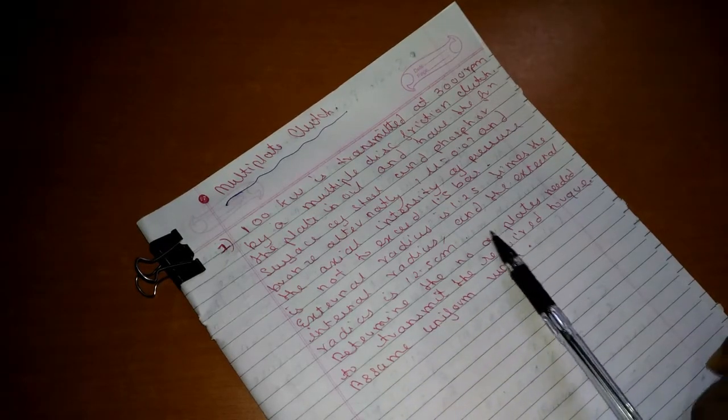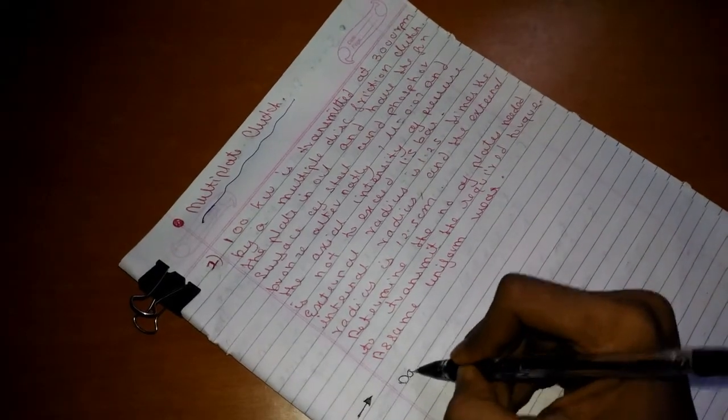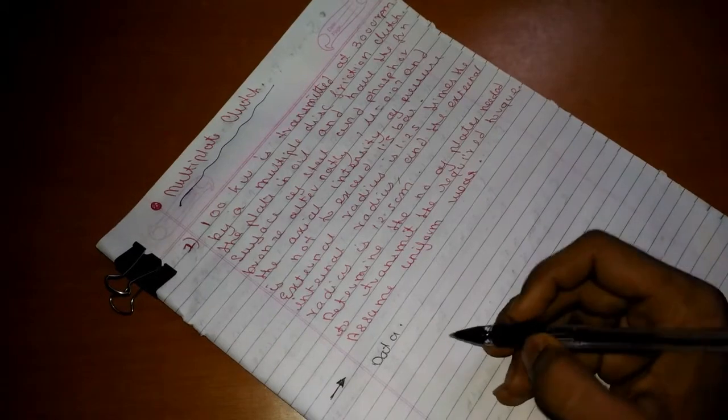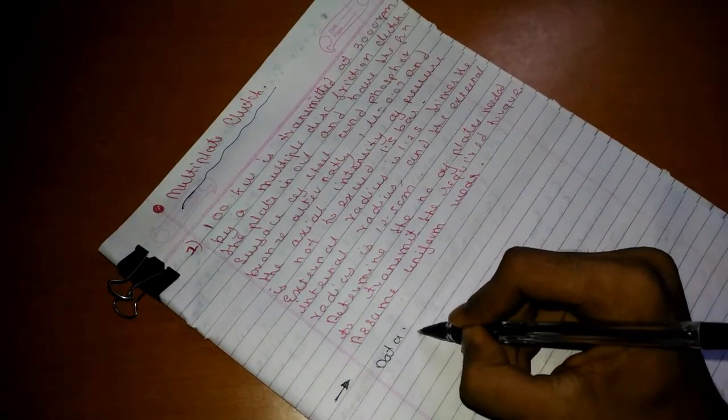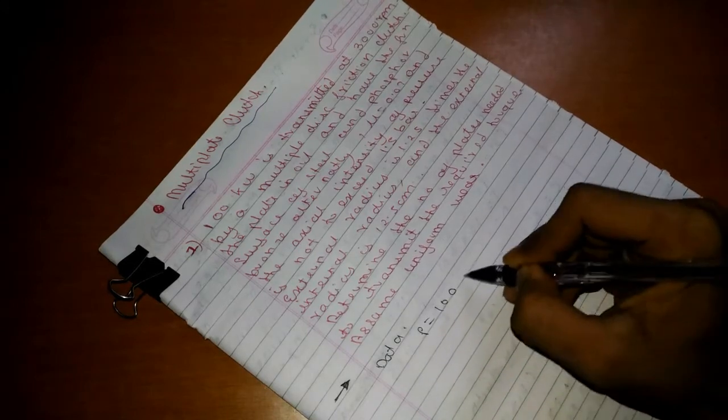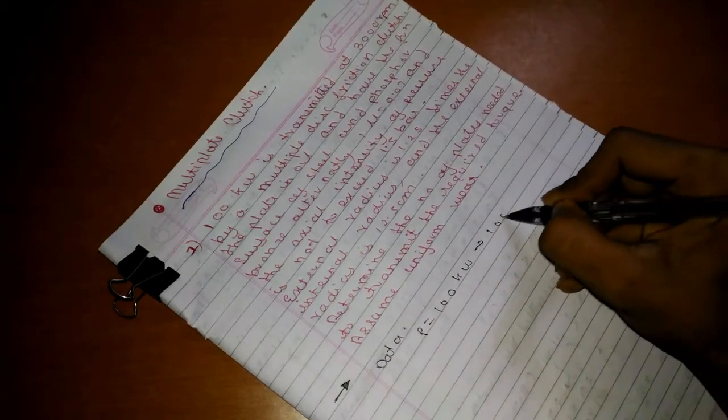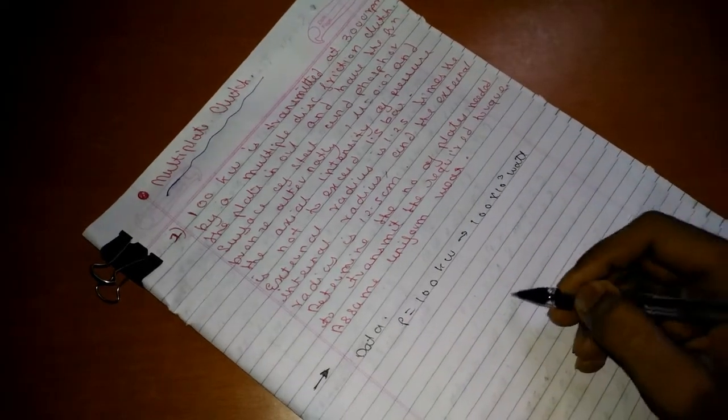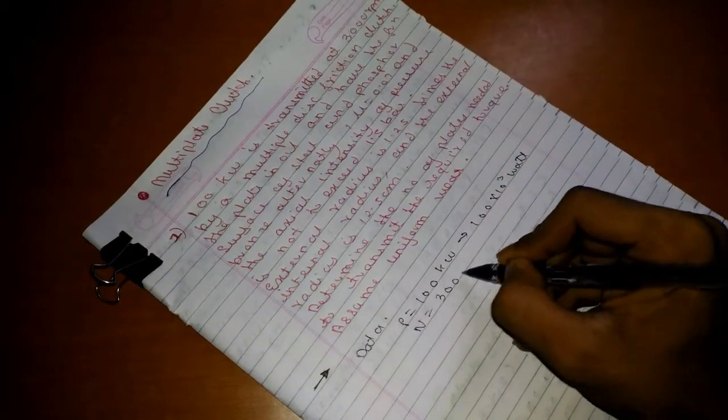Let us start with the data. We have the following data: power transmitted equals 100 kilowatt, that is 100 into 10 raised to 3 watts. The next is speed, that is 3000 rpm.